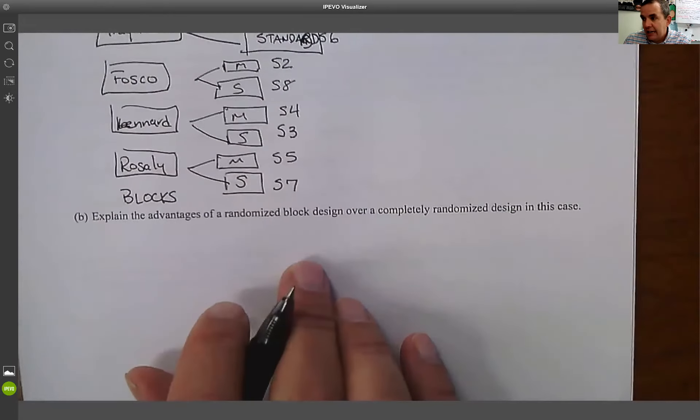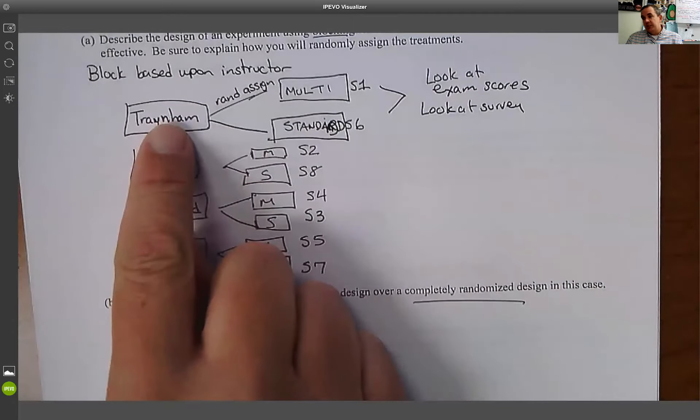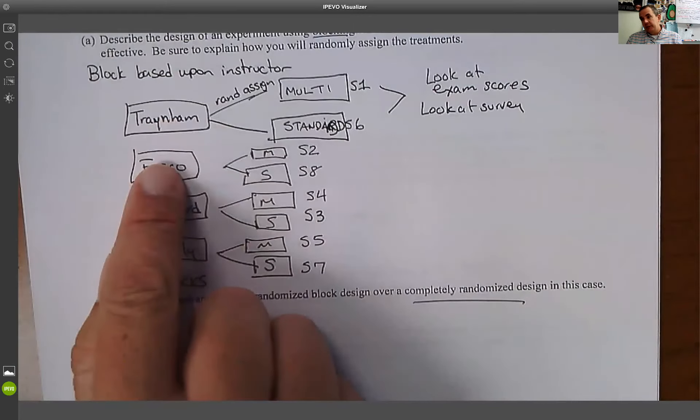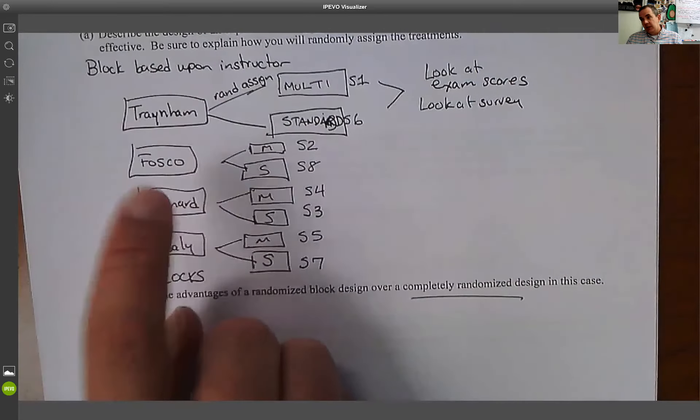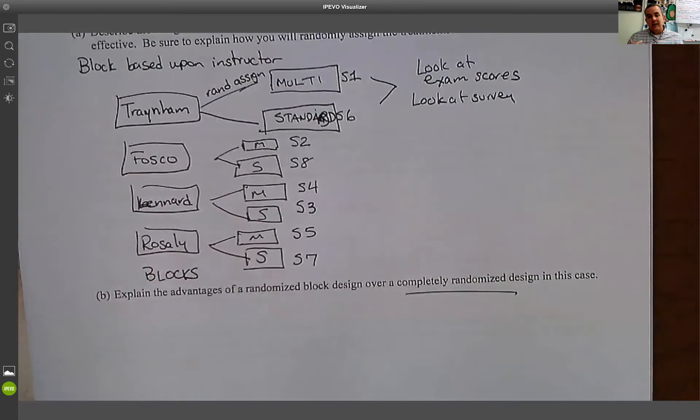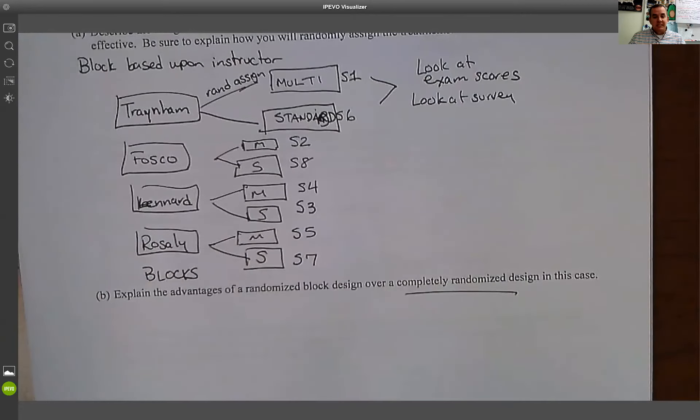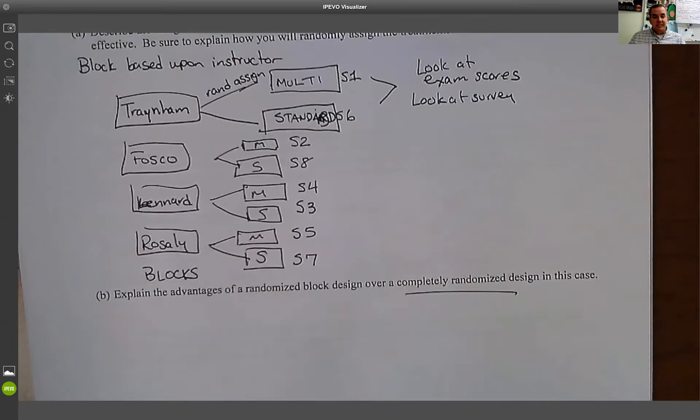Now, the last one. Explain the advantages of randomized block design over a completely randomized design. In this case, this way, each teacher acts as their own control. What it basically means is if I did a completely randomized design, what could have happened is that Traynum could have been teaching two multimedia sections. Fosco could have been teaching two multimedia sections. Lennard could have been two standard. And Rosalie could have been two standard. And now, even though I'm comparing multimedia to standard, the teachers could influence the results. So this way, I have the teachers acting as their own controls.